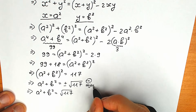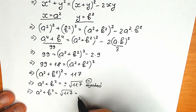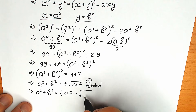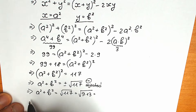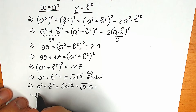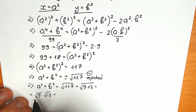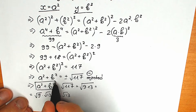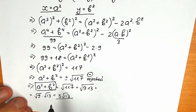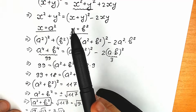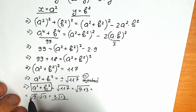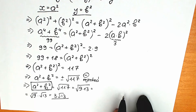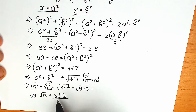We can simplify this: square root of 117 equals square root of 9 times 13. According to the square root property, we can split it: square root of 9 times square root of 13 equals 3 times square root of 13. So a squared plus b squared equals 3 square root of 13.